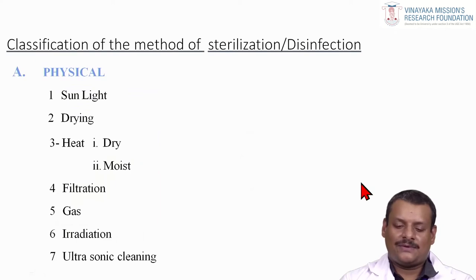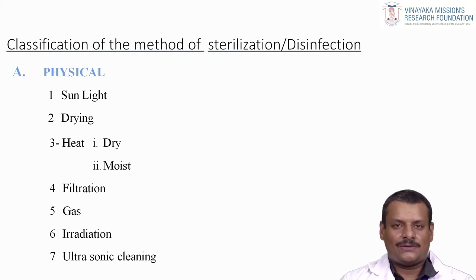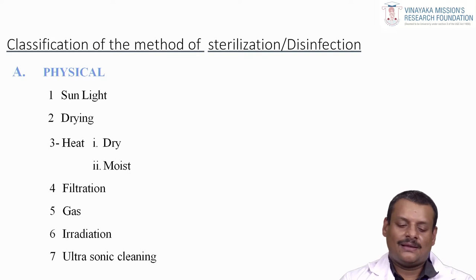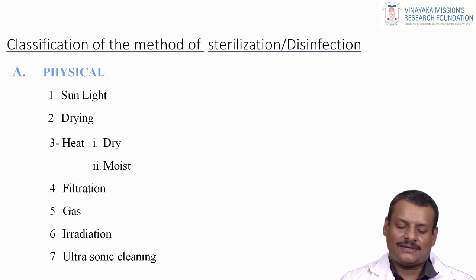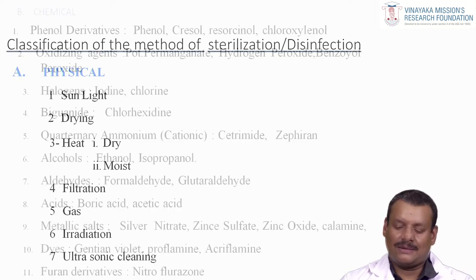The classification of methods of sterilization and disinfection includes first the physical method and second the chemical method. In physical methods, the primary source is sunlight, then drying, then heat — which includes dry heat and moist heat — followed by filtration, gas, irradiation, and ultrasonic cleaning.